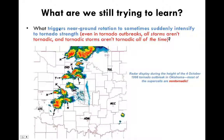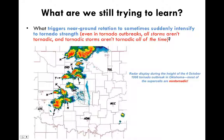Another big question: what triggers near-ground rotation that sometimes suddenly intensifies to tornado strength? Even in tornado outbreaks, not all storms are tornadic, and even tornadic storms aren't tornadic all of the time. In this rare fall tornado outbreak in Oklahoma, a snapshot of the radar shows that most of the storms are actually not making tornadoes at this time. The T's are tornadic storms, the N's are non-tornadic — many of them long-lived supercells. These are real challenges.